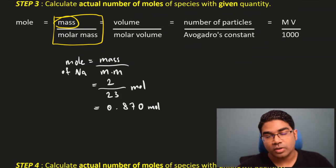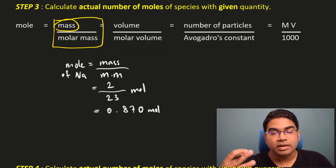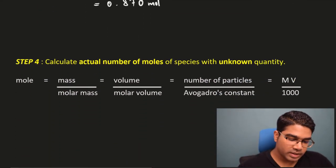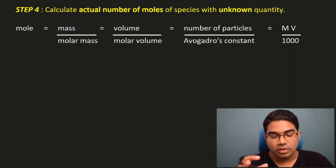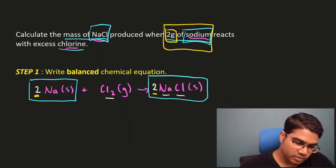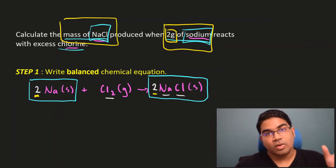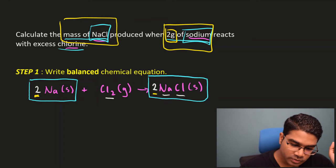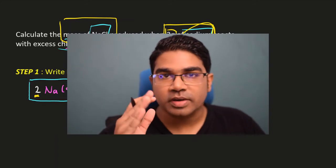Now we want to find the moles of sodium chloride. Once we know the actual moles of the given species, we can calculate the actual moles of the unknown using the mole ratio. The unknown here is sodium chloride — we want its mass. We cannot jump straight to mass; we first need moles of sodium chloride. We use the mole ratio, which is 1 to 1.